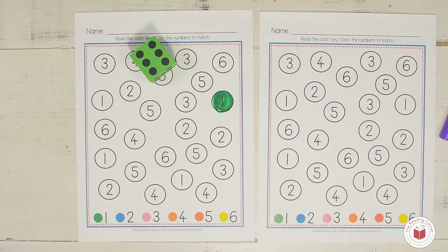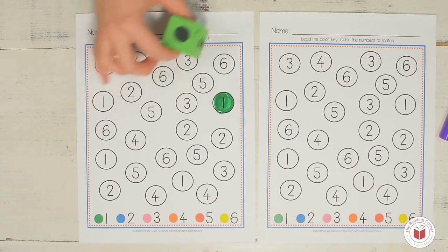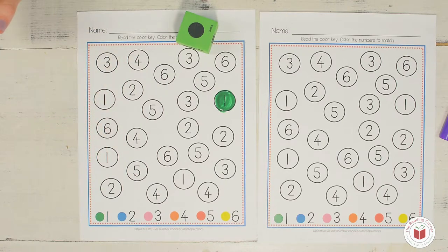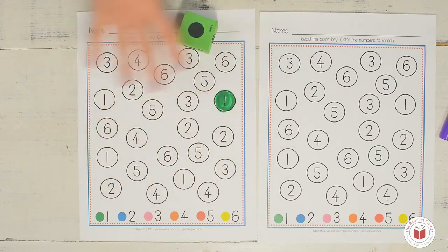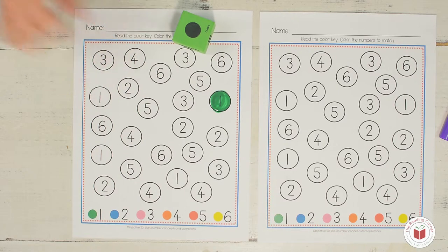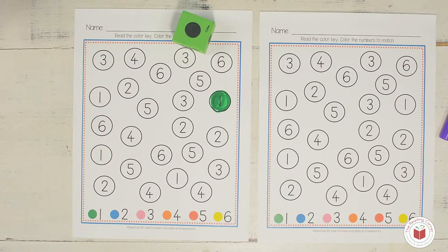Now the tricky part of this game is if I roll a one, but I've already covered all of my ones, then my turn's over. And the first player to color all of their numbers on their mat wins the game. So now it's your turn to go ahead and finish this activity.